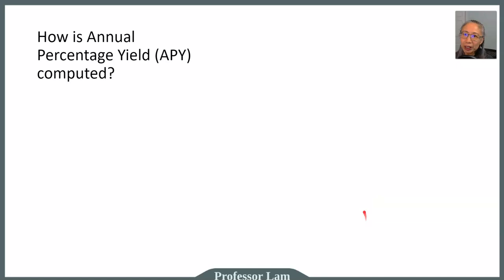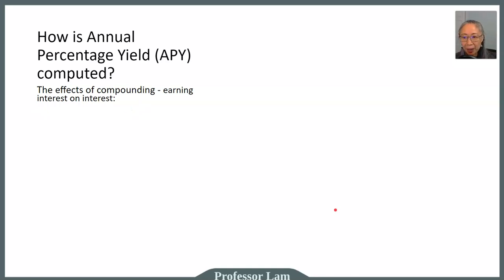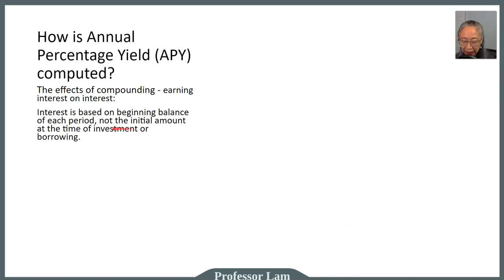To help you understand what's going on, let's look at how the annual percentage yield is computed — in other words, the impact of compounding. Compounding is a term we use to describe earning interest on interest. When we have compounding, the interest is based on the beginning balance of each period, rather than the initial amount that you borrow.